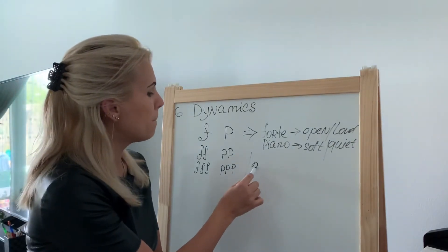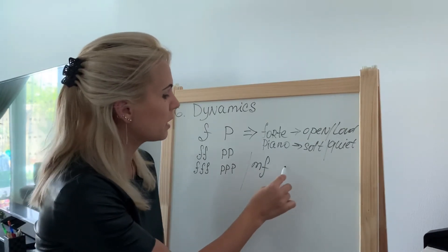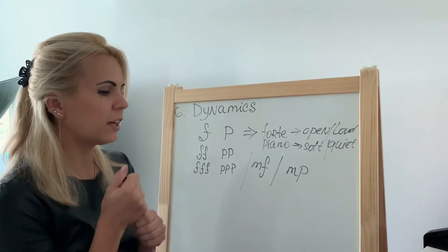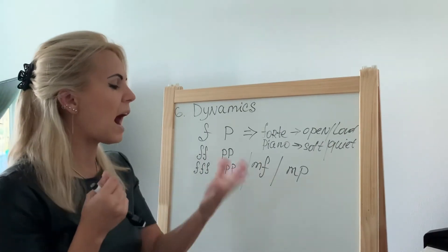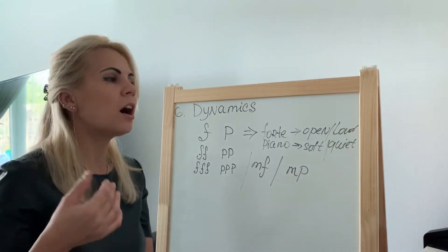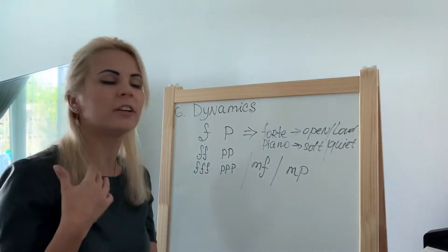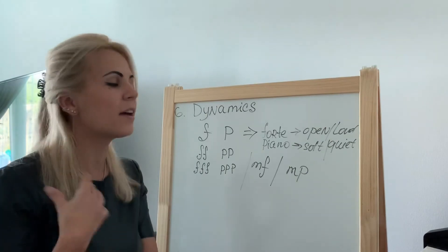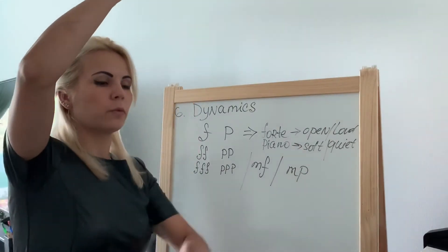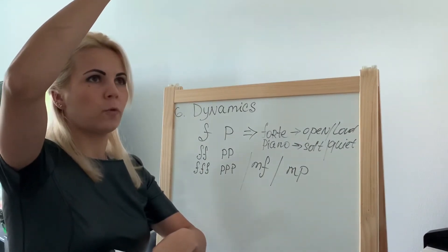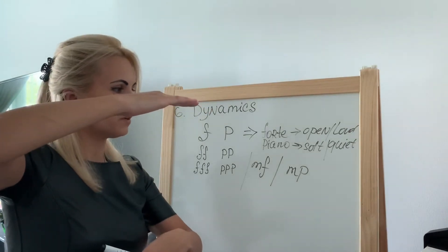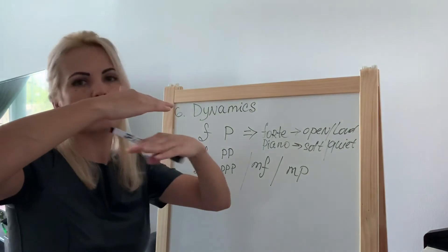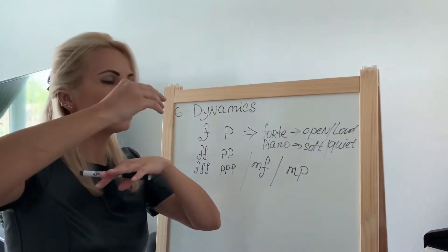Two other terms very often used in music sheets for beginners are mezzo forte and mezzo piano. Mezzo forte means half forte — half softer than forte — and mezzo piano means half piano — half louder than piano. So if forte is on one end and piano on the other, mezzo forte sits in the middle but is definitely louder than mezzo piano.